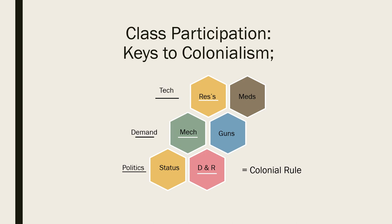And finally, divide and rule was necessary to keep resistance decentralized, to insulate Europeans from reprisals, and to make resource extraction easier. If you could get the two residents of a house to be busy arguing and fighting each other, it's easier to steal things from within. All of these factors form a matrix of influences that eventually lead to colonial rule in Africa and, as we'll see, played out in Asia as well.